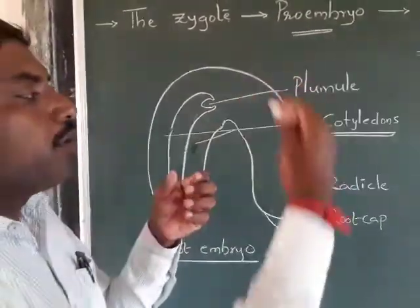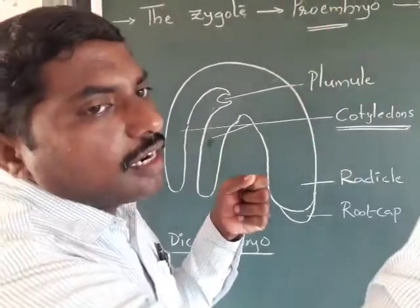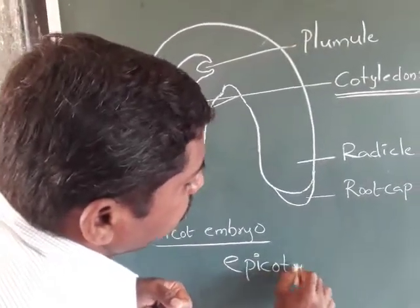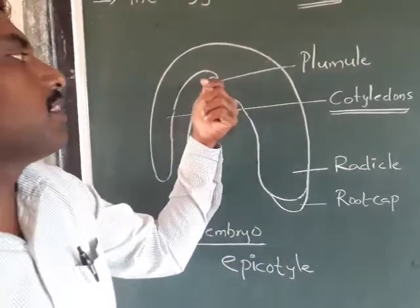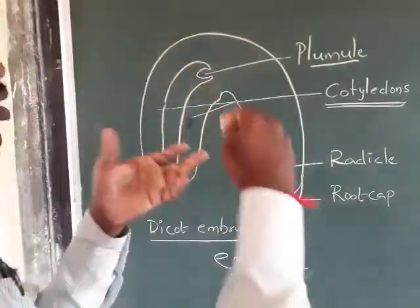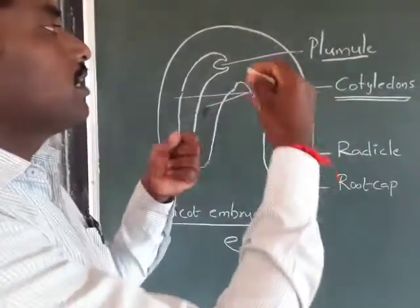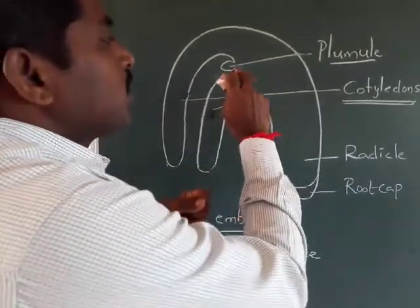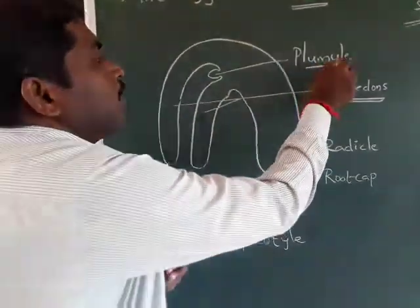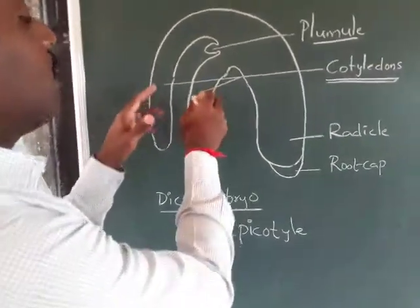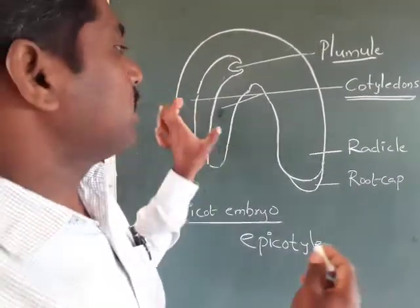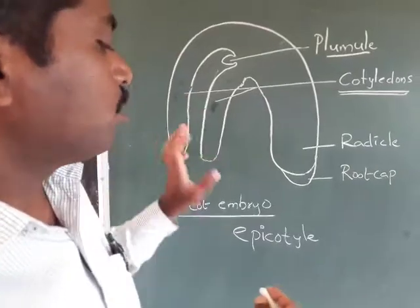The portion of the embryonal axis above the cotyledon is called the epicotyl. The epicotyl terminates with the plumule. The two cotyledons are fleshy and contain an abundant reserve of food material.